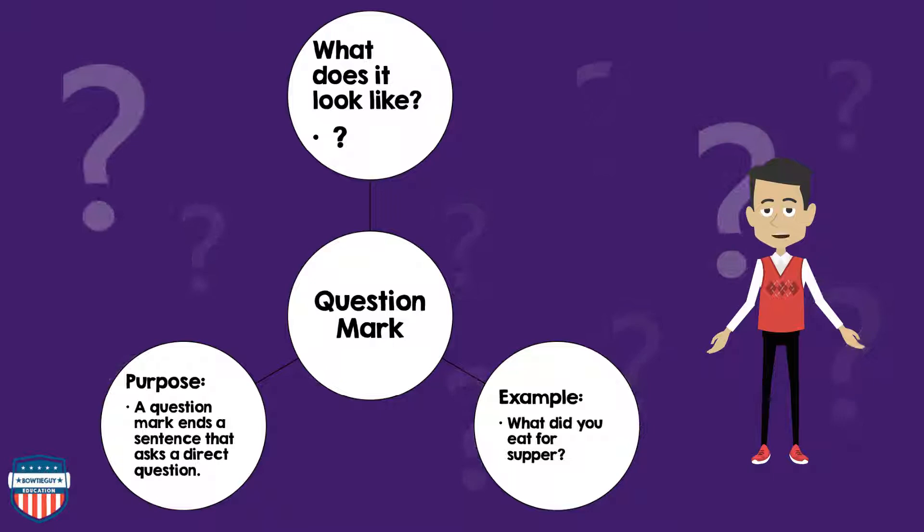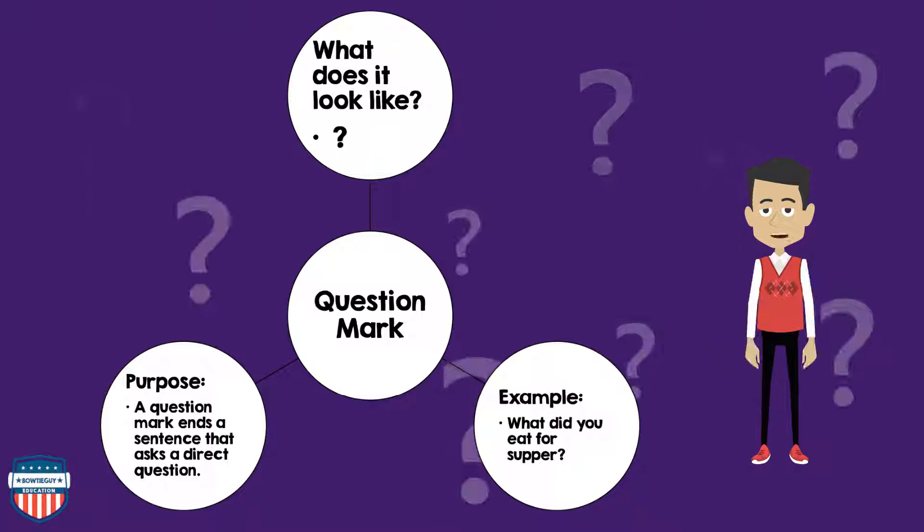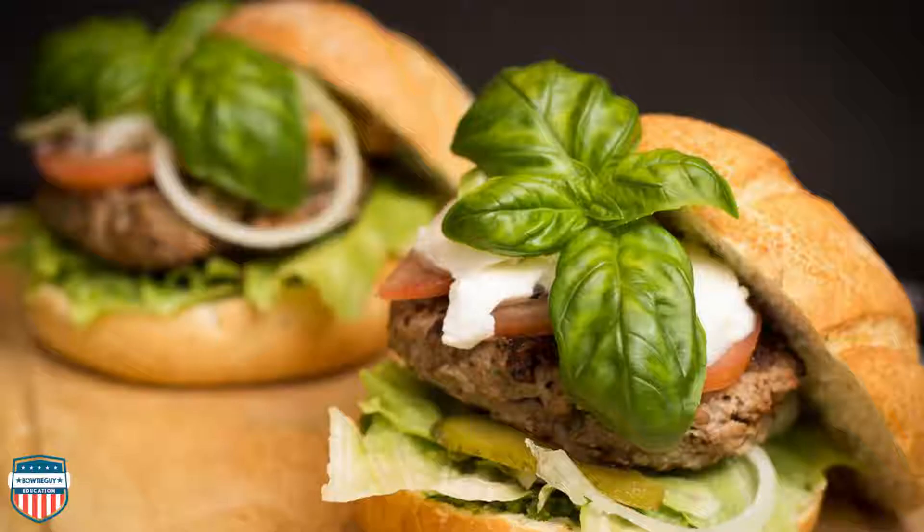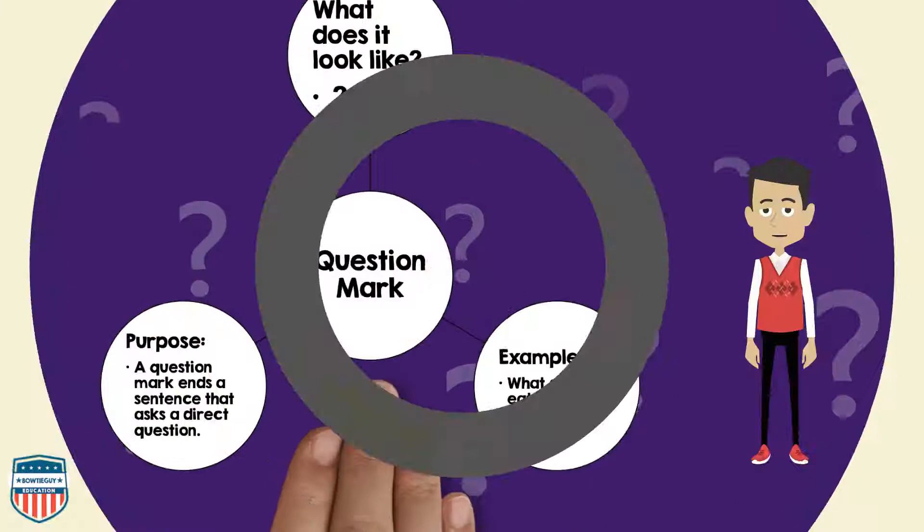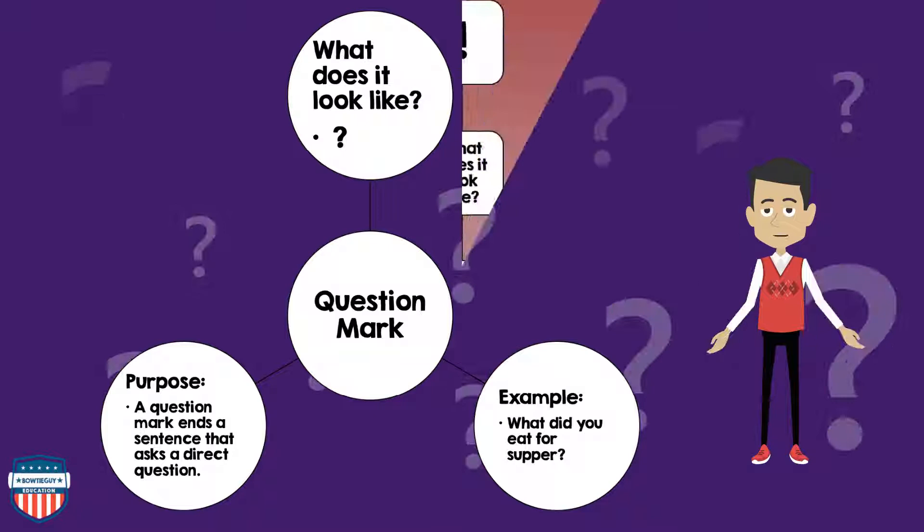Next, let's discuss the question mark. The question mark looks like a squiggly line with a dot underneath it. An example of a question mark in use: What did you eat for supper? The purpose of a question mark: it ends a sentence that asks a direct question.